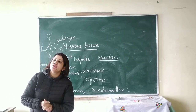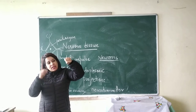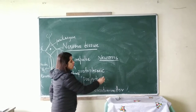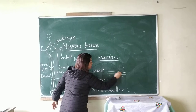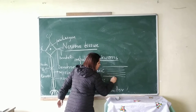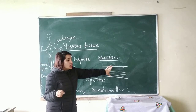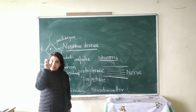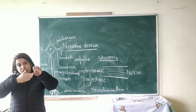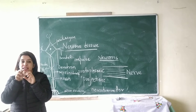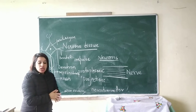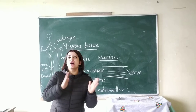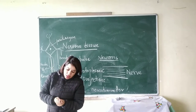Think of an electric cable — there is a plastic coating outside, and inside if you cut it, you will see many copper wires. Similarly, neurons are also covered by an insulated sheath. A bundle of neurons is called a nerve. The function of the nervous tissue is to conduct impulse to and from the brain and the spinal cord.